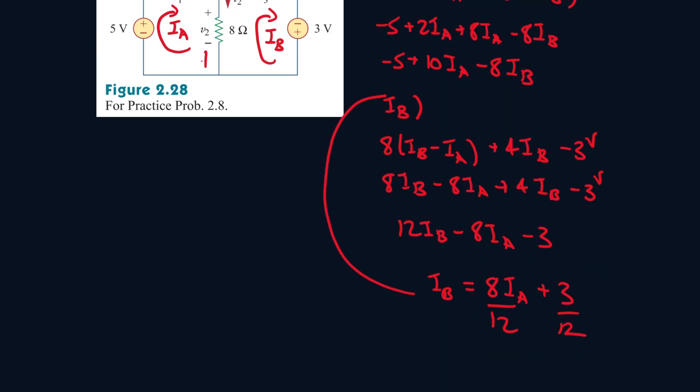Now let's plug that in into here. So we have minus 5 plus 10 IA minus 8, 8 IA over 12 plus 3 over 12. And if we distribute this in, it will be minus 5.33 IA. And if we distribute the 8 over here, it will be minus 2.